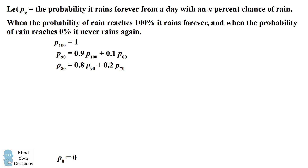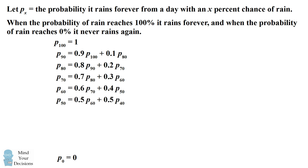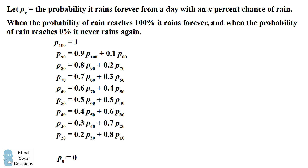We can similarly compute these probabilities for all the other states. Each day you're going to transition either up 10% or down 10%, depending on the current day's probability of rain. We now have a system of equations, and we can solve this systematically.